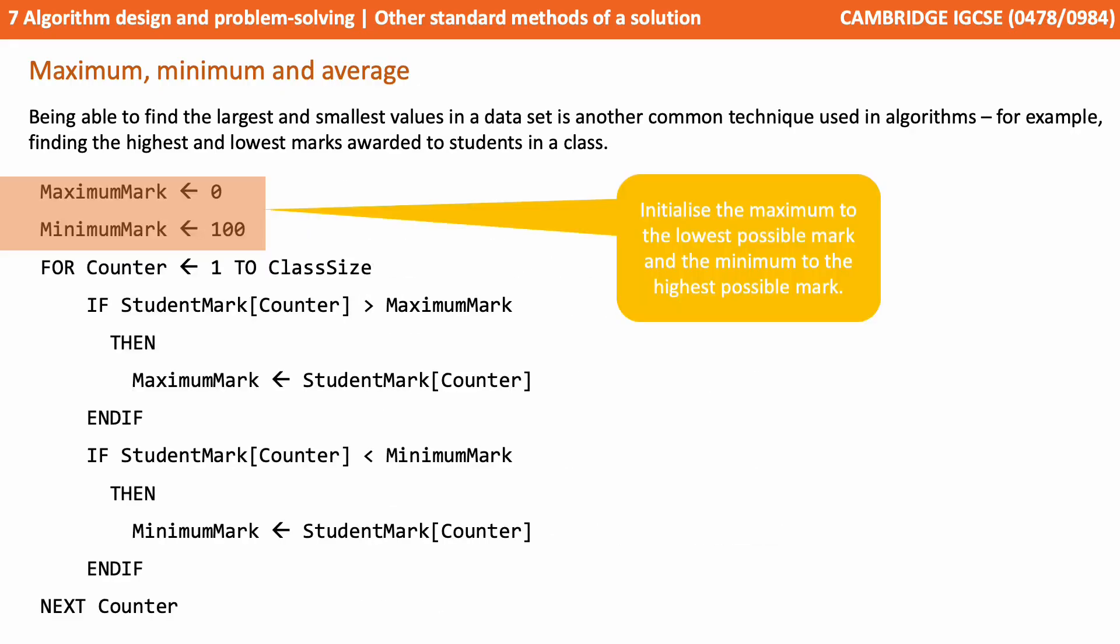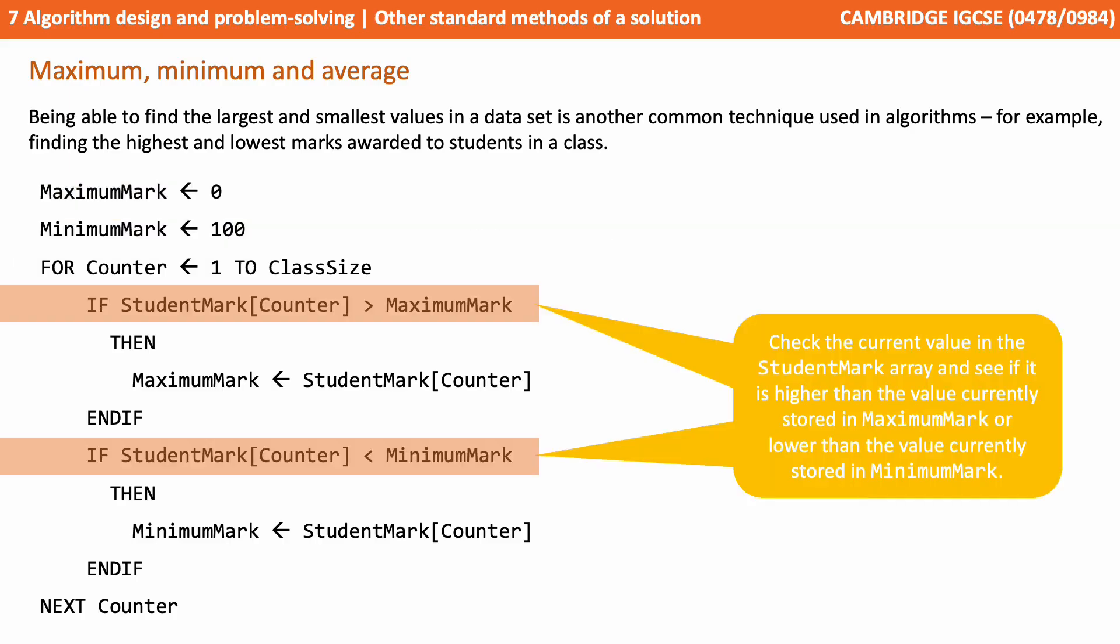So here we've started by initializing the maximum mark to the lowest possible mark and the minimum mark to the highest possible mark. We check the current value in the student mark array and see if it is higher than the value currently stored in maximum mark or lower than the value currently stored in minimum mark.